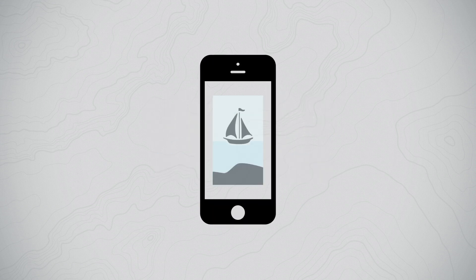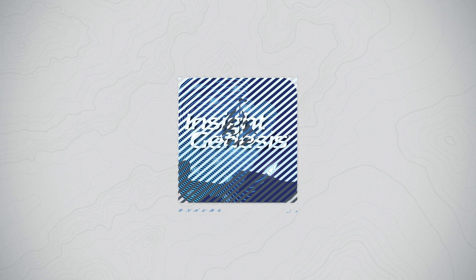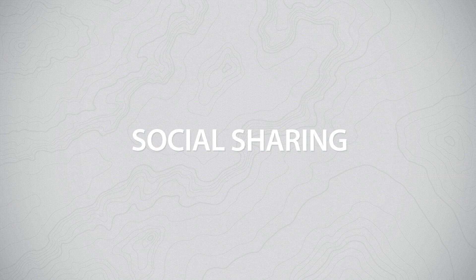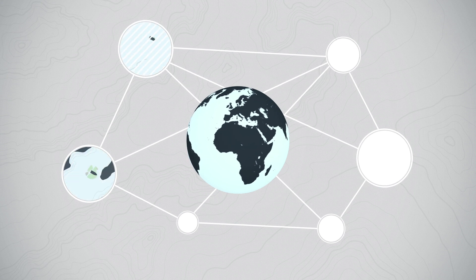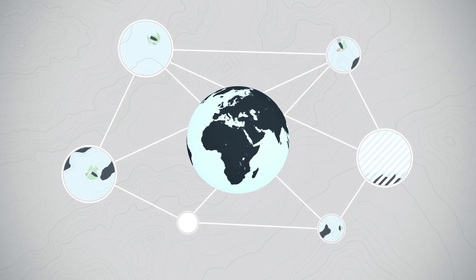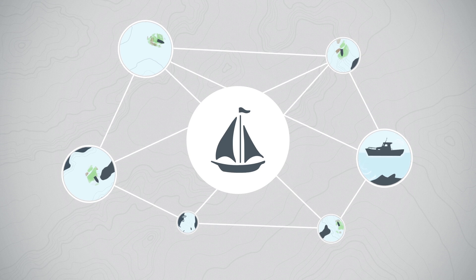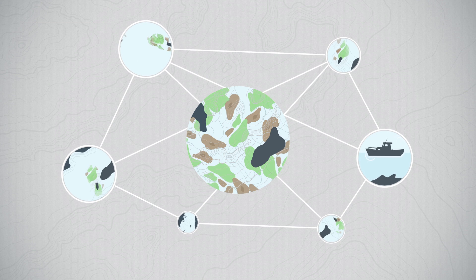If you've used a smartphone or shared a photo through social media, you can use Insight Genesis. Social sharing is key to the future of marine mapping. The Insight Genesis Social Map is an online database of coastal and inland maps generated and shared by fishing, cruising, and sailing enthusiasts. Social Map allows you to easily summon and combine detailed contour maps of water both close to home and around the globe.